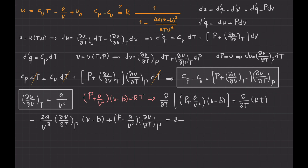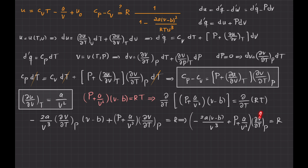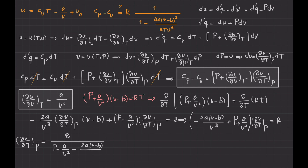On the right-hand side I have R. I factor out the partial of V with respect to T at constant P, leaving minus 2A times V minus B over V-cubed plus P plus A over V-squared. So the partial derivative of V with respect to T at constant P equals R divided by P plus A over V-squared minus 2A times V minus B over V-cubed.